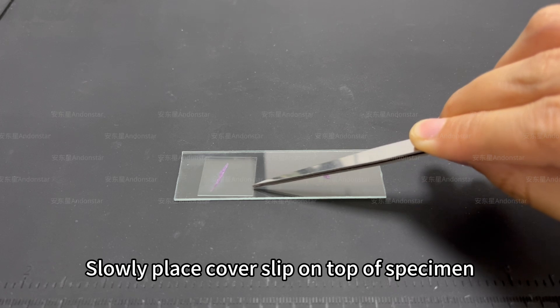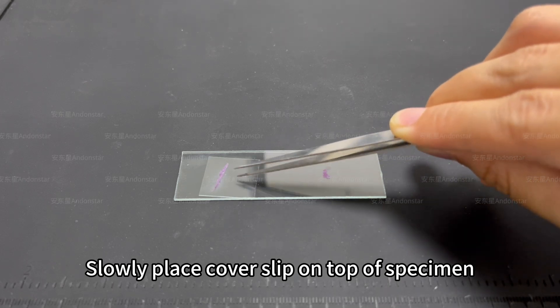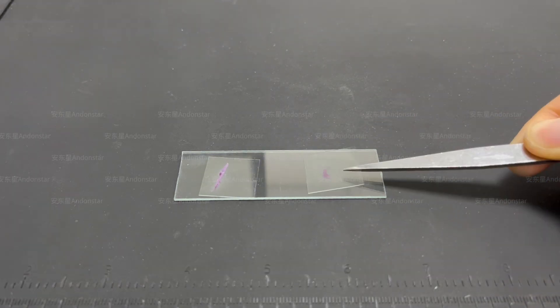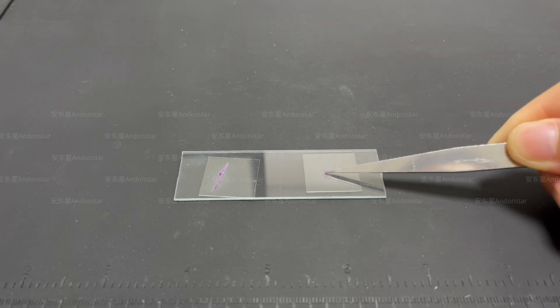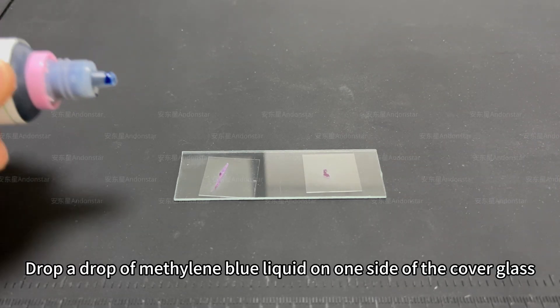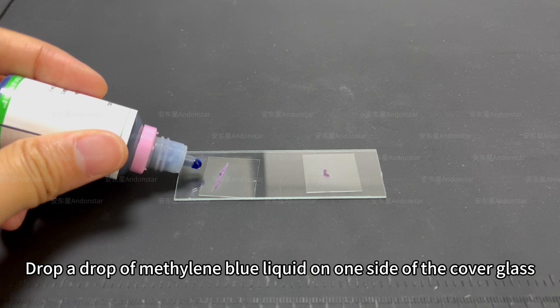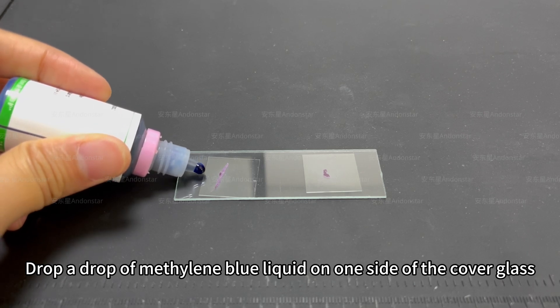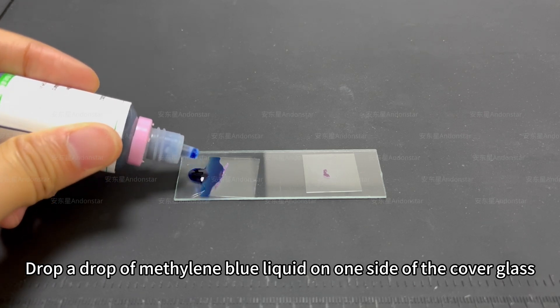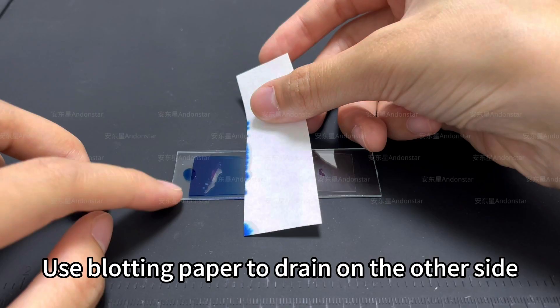Slowly place cover slip on top of specimen. Drop a drop of methylene blue liquid on one side of the cover glass. Use blotting paper to drain on the other side.